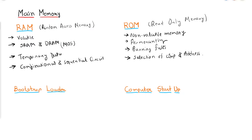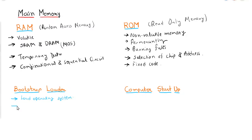By providing chip selection and address, you can read the content of ROM. ROM stores a fixed portion of code that is executed every time. This relates to the bootstrap loader, which is used to load the operating system. For example, in Linux, the bootstrap loader begins the startup process.